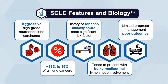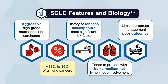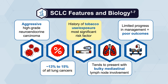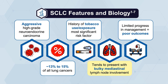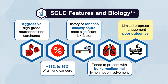We'll begin with a historical perspective on small cell lung cancer outcomes. This is an aggressive, high-grade neuroendocrine carcinoma accounting for about 13% to 15% of all lung cancers. The vast majority are associated with a significant smoking history. Rarely, it can occur in those with a very limited or never smoking history, which are considered outliers. Small cell lung cancer tends to present with bulky mediastinal lymph node involvement, and there is often metastatic disease at the time of diagnosis. Until recently, there had been very limited progress in management, with few advances and poor outcomes.